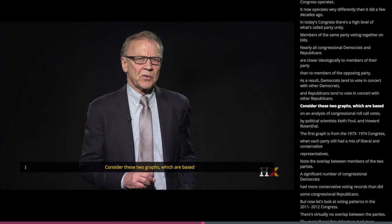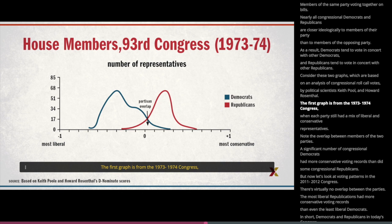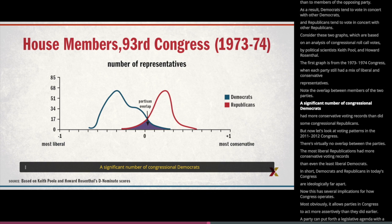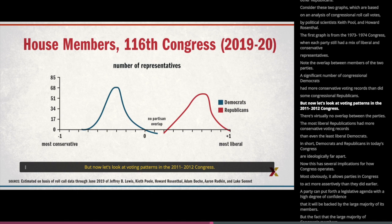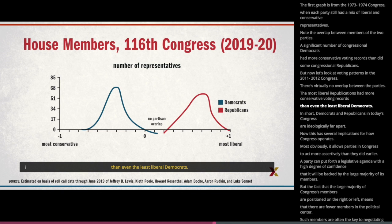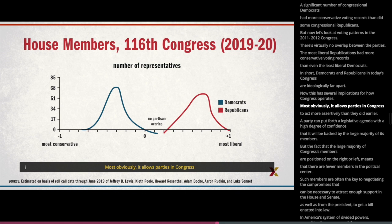Consider these two graphs, which are based on an analysis of congressional roll call votes by political scientists Keith Poole and Howard Rosenthal. The first graph is from the 1973–74 Congress, when each party still had a mix of liberal and conservative representatives. Note the overlap between members of the two parties — a significant number of congressional Democrats had more conservative voting records than did some congressional Republicans. But in the 2019–2020 Congress, there is no overlap between the parties. No Republican's voting record was as liberal as that of the least liberal Democrat, and no Democrat's voting record was as conservative as that of the least conservative Republican. Democrats and Republicans in today's Congress are ideologically far apart.